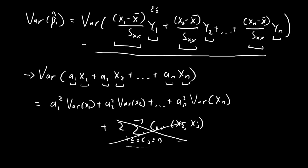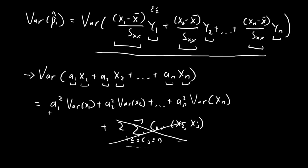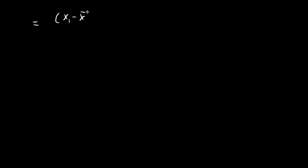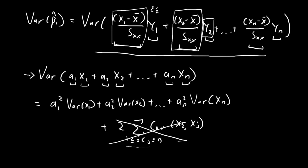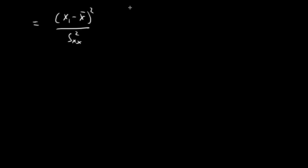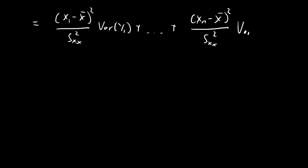So this expression for the variance of beta 1 hat is now given by the formula with the covariance term dropped. We take each constant, square it, and multiply by the variance of the corresponding y term. So we get (x1 minus sample mean)² divided by Sxx², times Var(y1), and this goes on all the way to (xn minus sample mean of x)² divided by Sxx², times Var(yn).